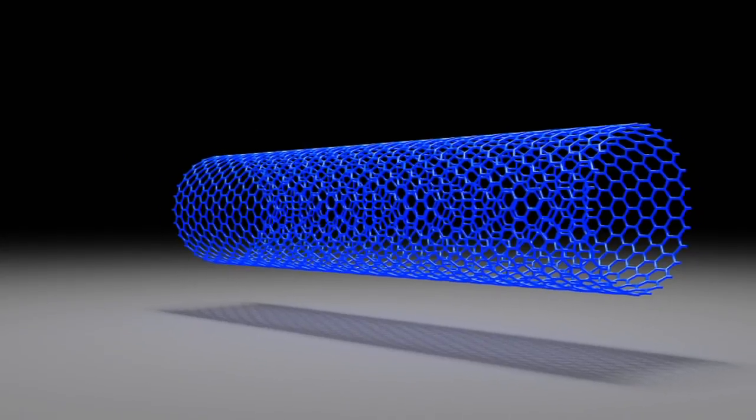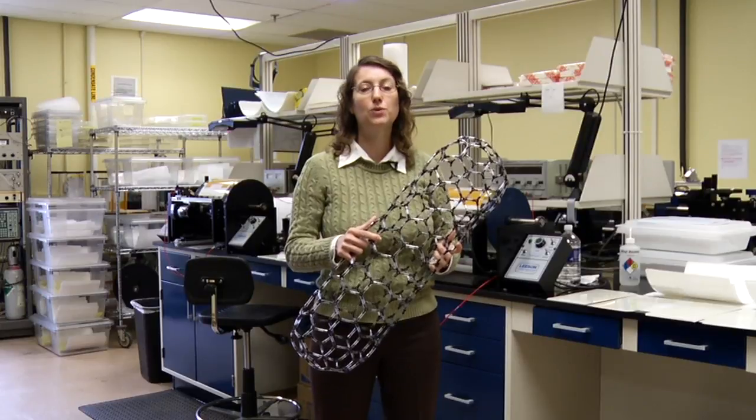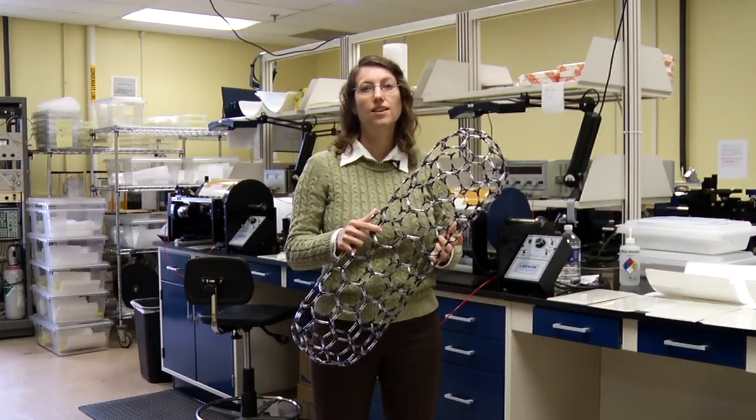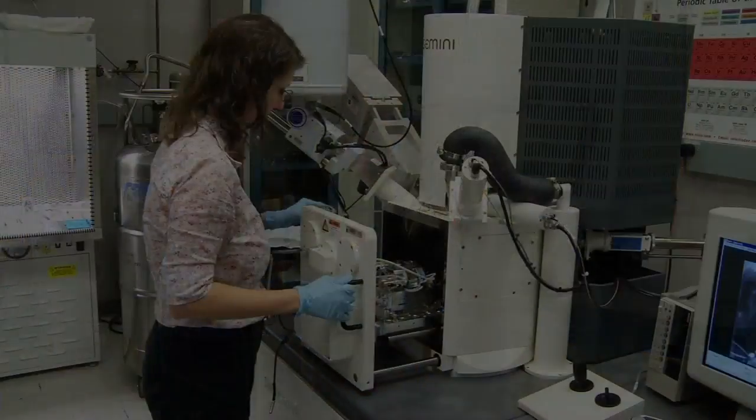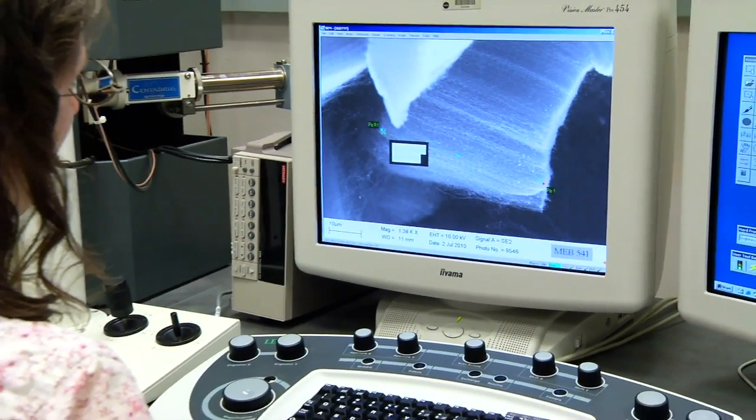It is a hollow tube that's made entirely out of carbon, and the diameter is a nanometer. If this were the size of an actual nanotube and you were to scale me up proportionately, then I would be tall enough to reach the moon. Because the nanotubes are so small, we can only use a scanning electron microscope to be able to see them.